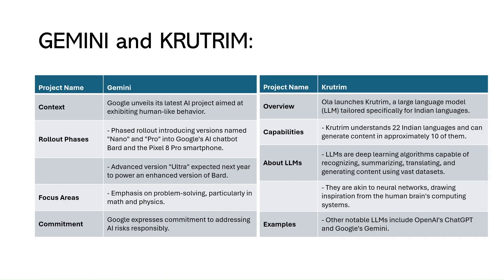Large Language Models or LLMs are deep learning algorithms capable of recognizing, summarizing, translating, and generating content using vast datasets. Examples of LLMs include OpenAI's ChatGPT, Google's Gemini, and Ola's Krutrim AI.